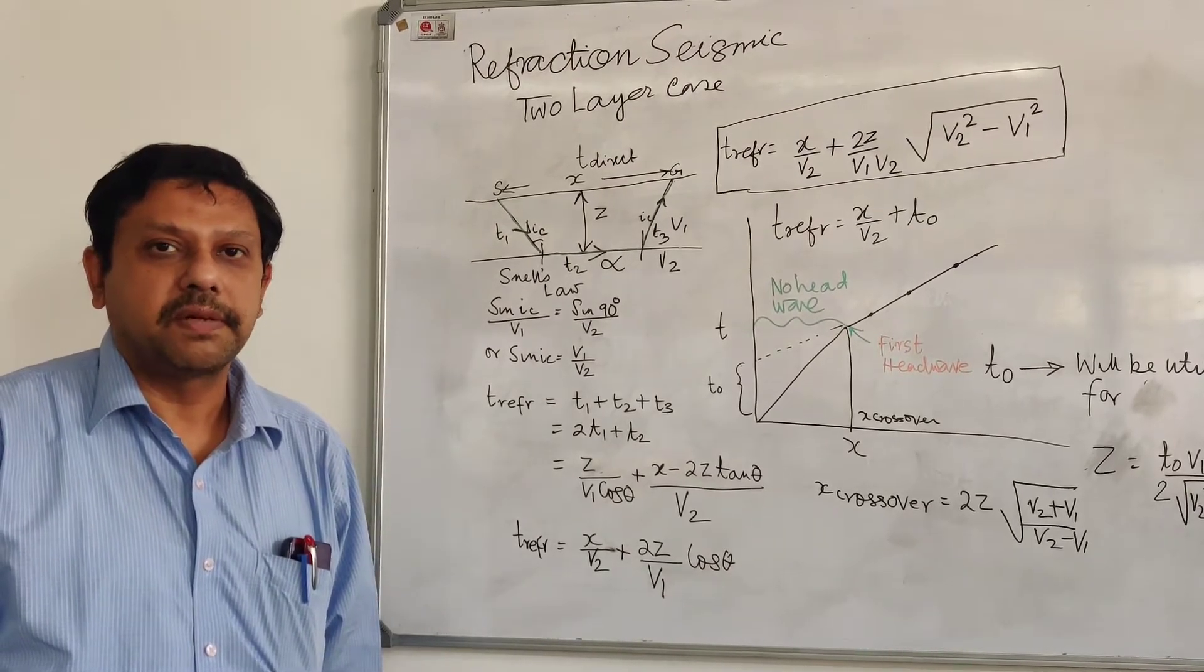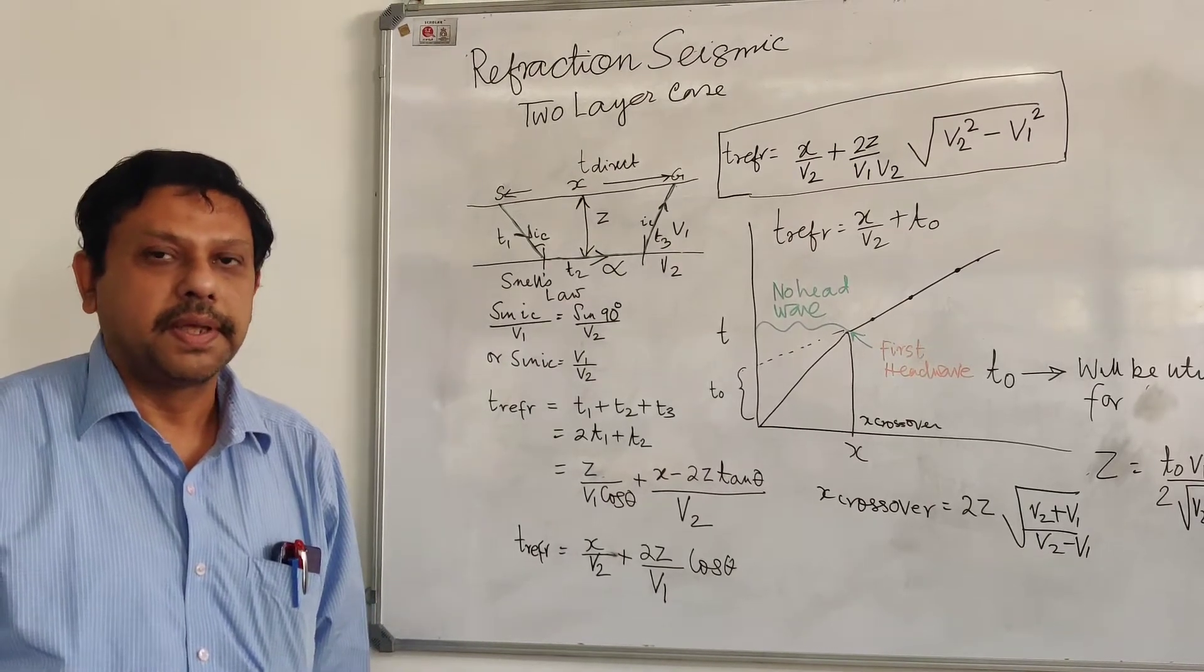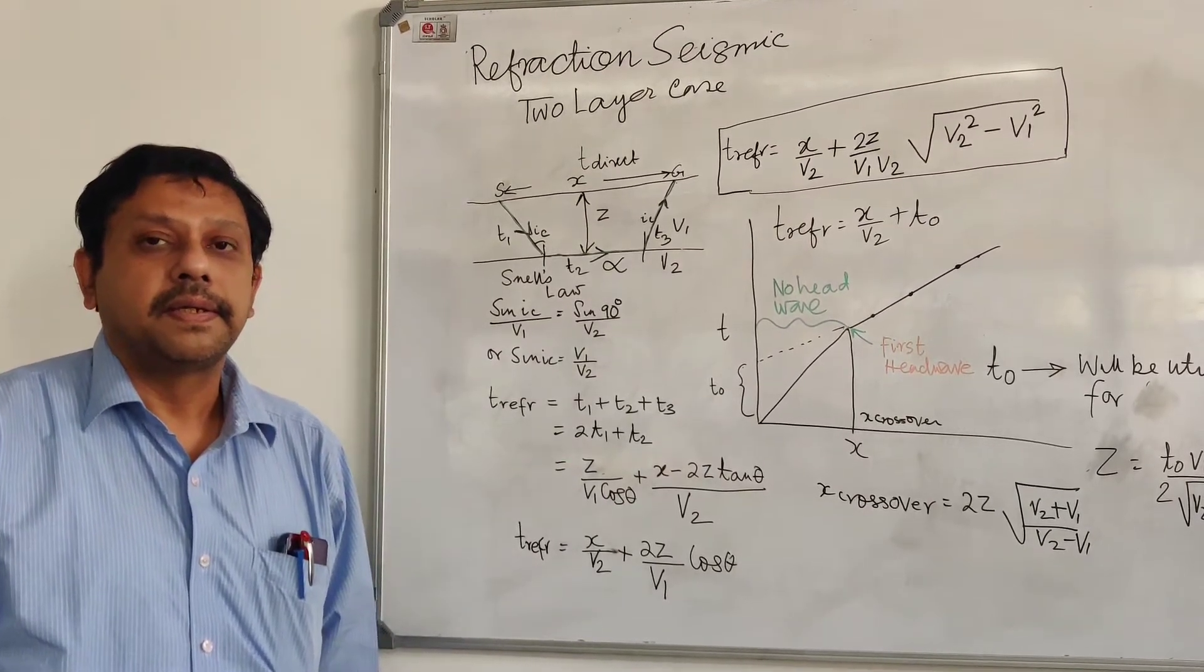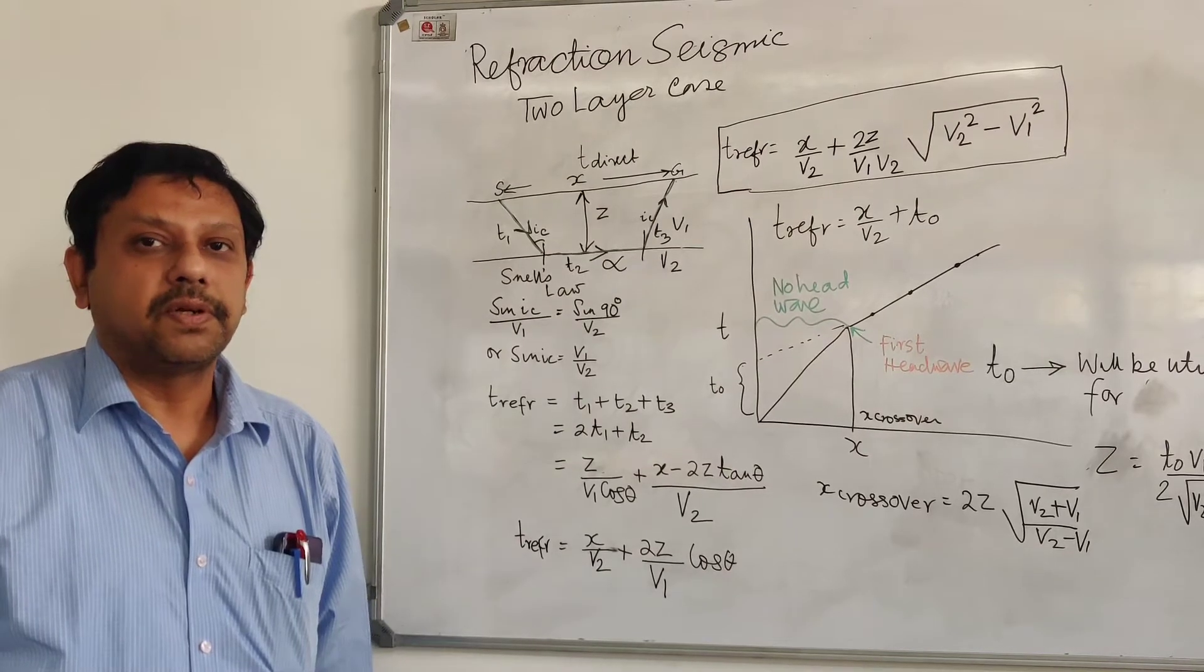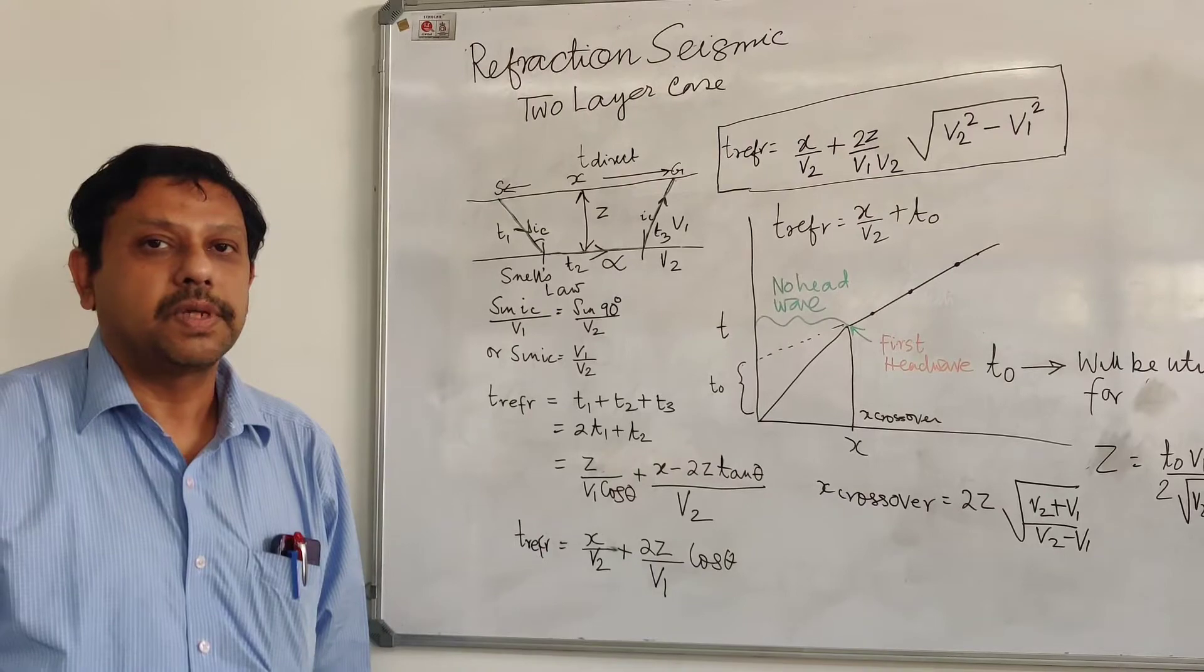Now, in the refraction survey, we do not require much energy, so we can use a gong and a hammer. And that is the energy which is required to go into the subsurface and then come back to the surface by the process of refraction.